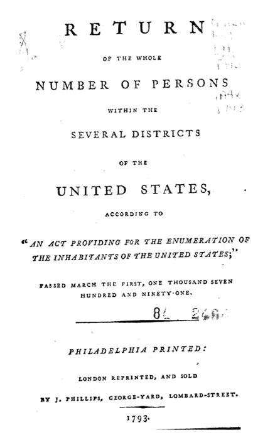In 1800 and 1810, the age question regarding free white males was more detailed. The 1820 Census built on the questions asked in 1810 by asking age questions about slaves. Also, the term 'Colored' entered the census nomenclature. In addition, a question stating 'Number of foreigners not naturalized' was included.